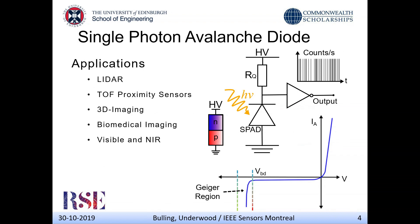Current applications driving this technology are LIDAR for autonomous vehicles, time-of-flight proximity sensors — odds are you have one in your phone already — 3D imaging, and biomedical imaging for fluorescence lifetime imaging and particle tracking. All of these applications are very specific to the visible and near-infrared spectrums.